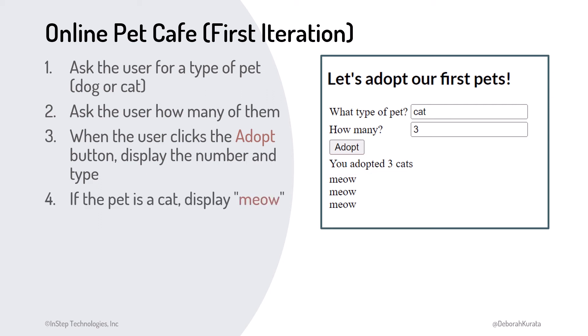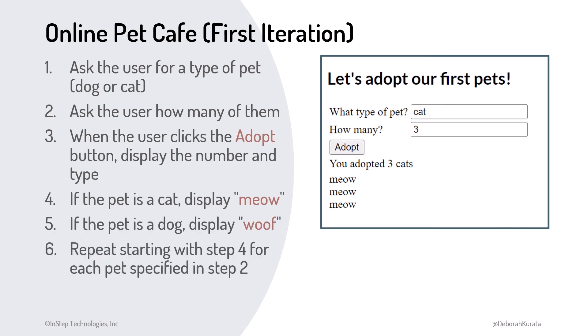We then define a decision we want the computer to make: if the pet is a cat, output what a cat says; if the pet is a dog, output what a dog says. Lastly, we define a loop to repeat the message for each adopted pet. We have now written our first program, even if it is just in pseudocode.